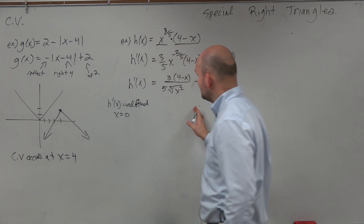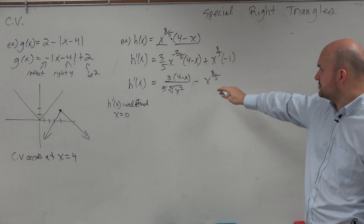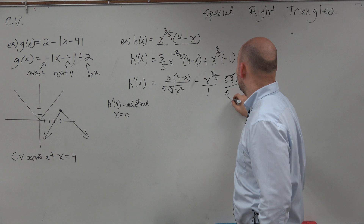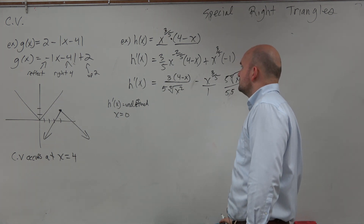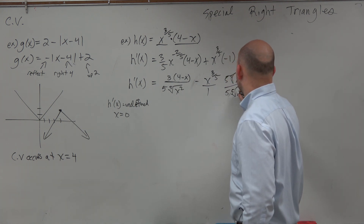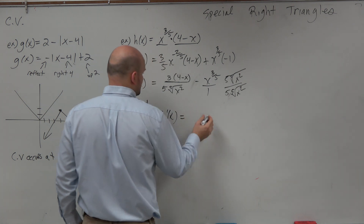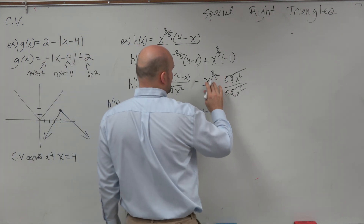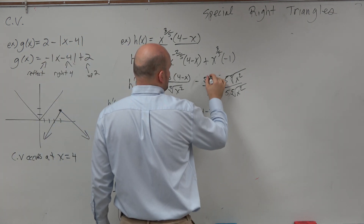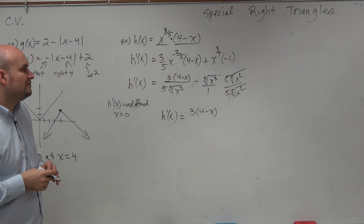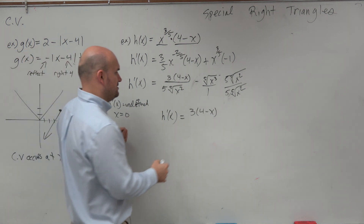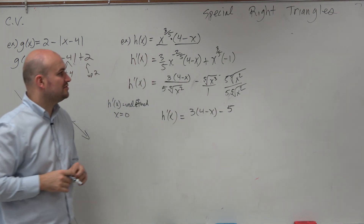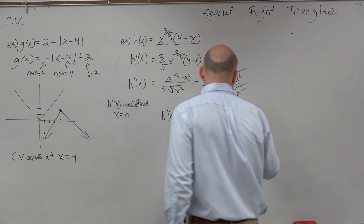Now we want to figure out when these are all equal to zero. One thing I might want to do is actually combine these to get common denominators, so I can multiply by 5 times the fifth root of x squared. So we'd have h prime of x is equal to 3 times (4 minus x) times the fifth root of x cubed, minus 5 times the fifth root of x cubed times x squared — adding the powers — so that's going to be the fifth root of x to the fifth, which is just 5x.